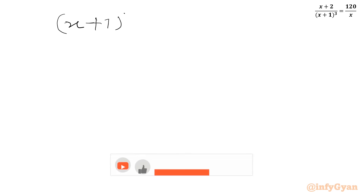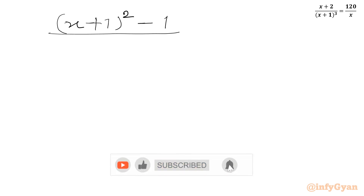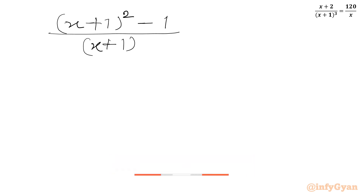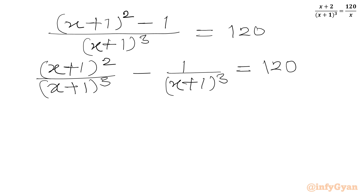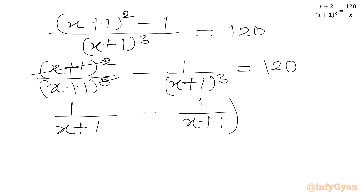So we have (x + 1)² − 1 over (x + 1)³ equal to 120. Since (x + 1)² over (x + 1)³ simplifies, we can write 1/(x + 1) minus 1/(x + 1)³ equal to 120.